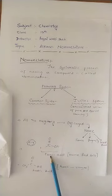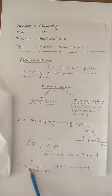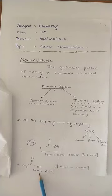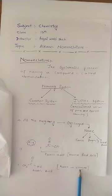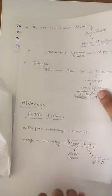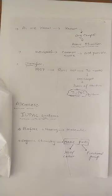Toh isi wajah se is compound ka naam rakha gaya tha, on the basis of source, formic acid. Similarly, yeh CH3COOH jo compound hai, is ka naam hai acetic acid, aur yeh bhi on the basis of source aur Greek word terminologies mein. Yeh jo acetic acid hai, isko kaha jata hai vinegar, isko kaha jata hai.